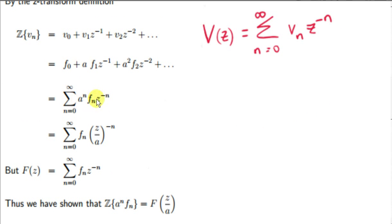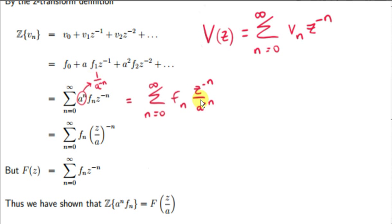Now we can bring the constant a inside under the power minus n. We need to change the power of a from n to minus n. We can write a to the power of n as 1 over a to the power of minus n. This gives us a to the power of n written in terms of a to the minus n, and that minus n power can be taken outside the quotient. The Z-transform of f sub n, with z replaced by z over a.